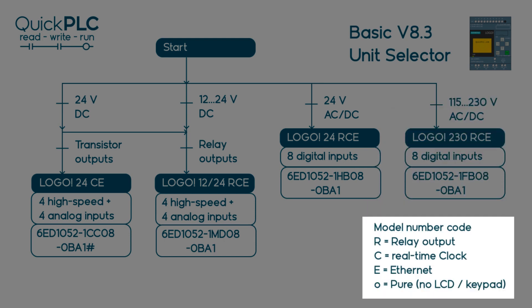In the product name R means relay output, C means real-time clock and E means Ethernet. All of the version 8.3 basic units come with clock and Ethernet. The O suffix indicates that the basic unit has no LCD or keypad.